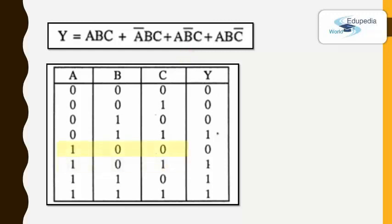For the fifth row, both inputs B and C have the value 0, but we don't have any group having both B complement and C complement, therefore this row gives output 0 for the whole expression. For the fourth row, input A has the value 0 and we have A bar in the second group, therefore the second group outputs 1, so the whole expression gives output 1. For the third and second rows, there is no related group, and for the first row all values are 0, so the final output is also 0. That's how we fill out this truth table without checking each and every intermediary step.